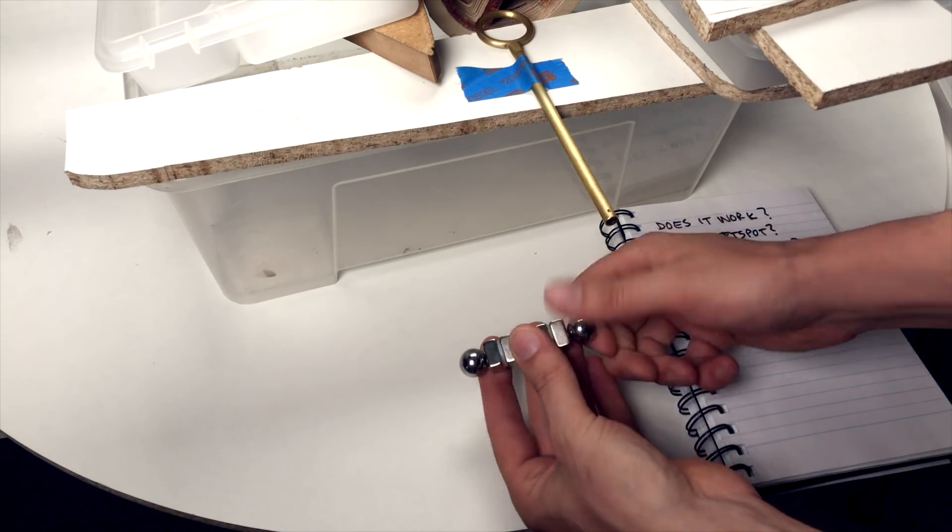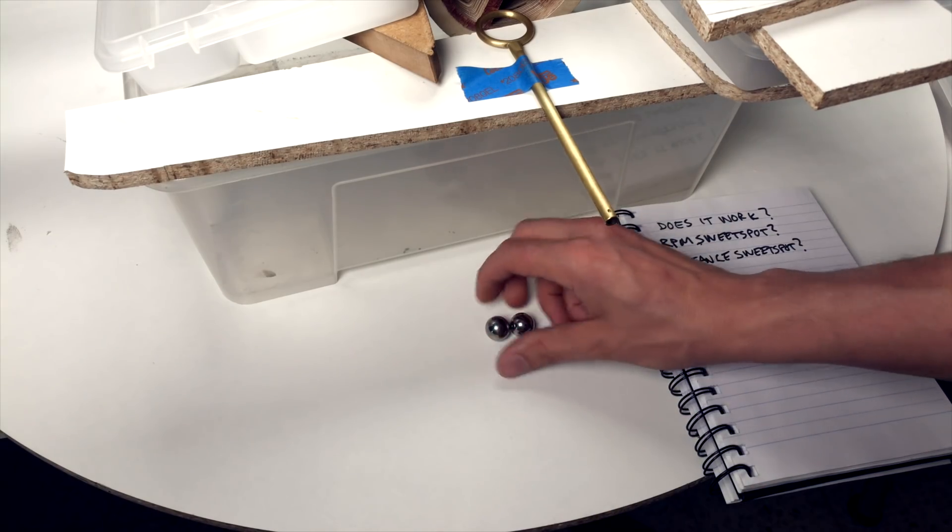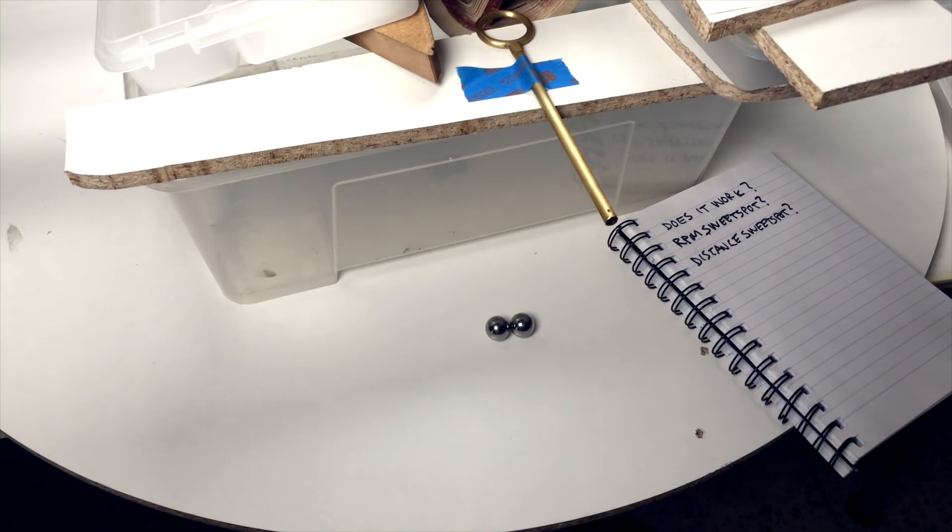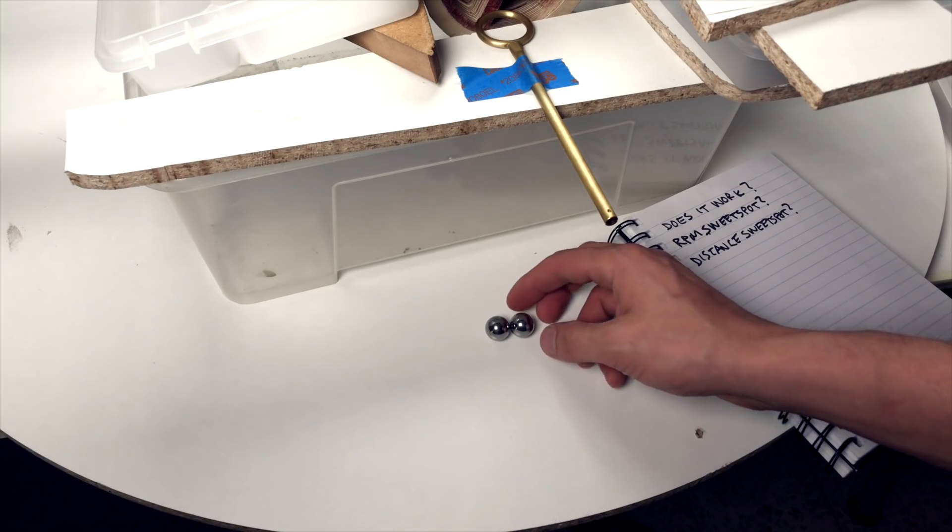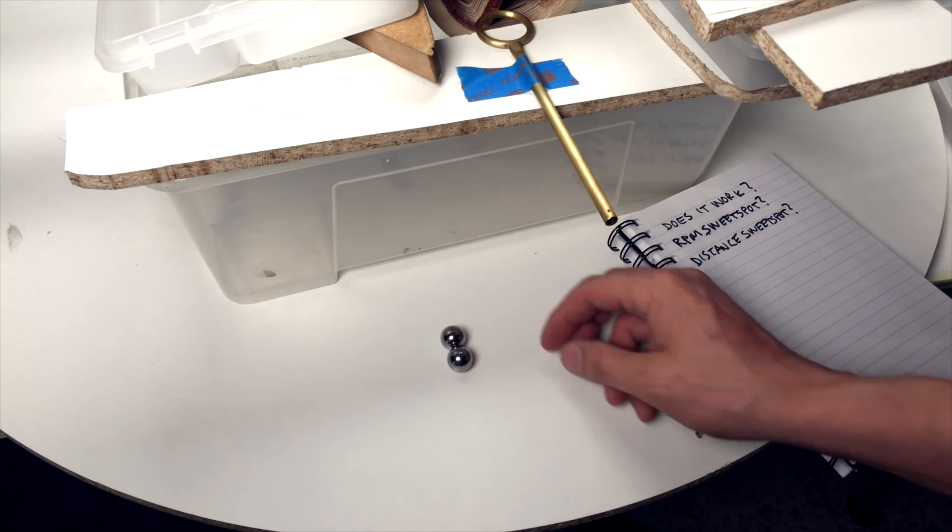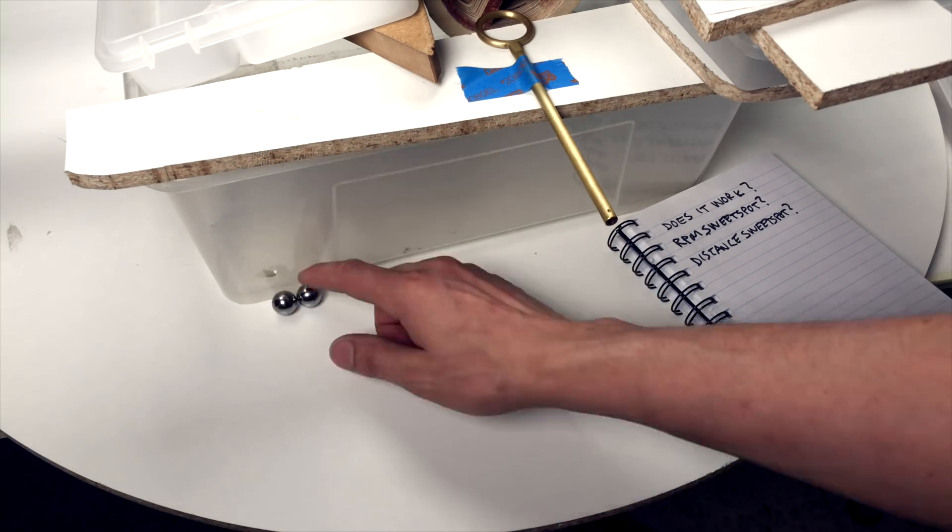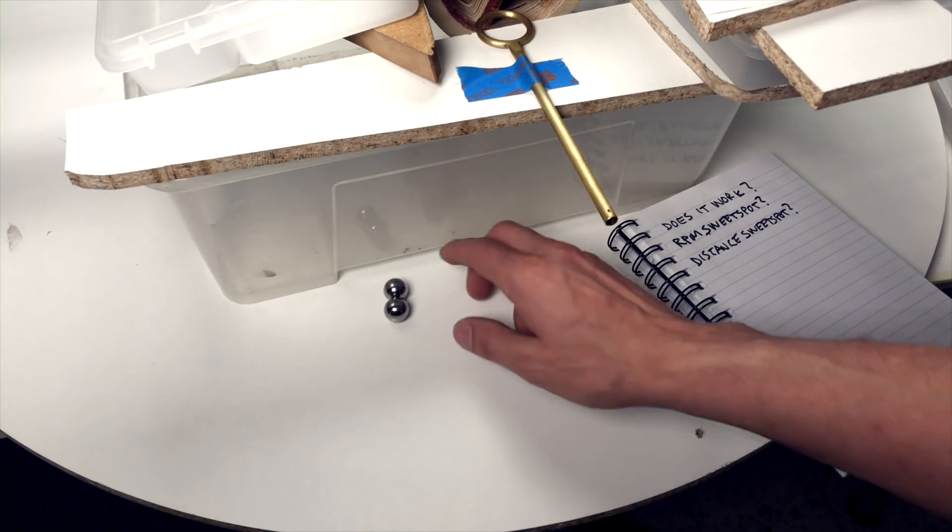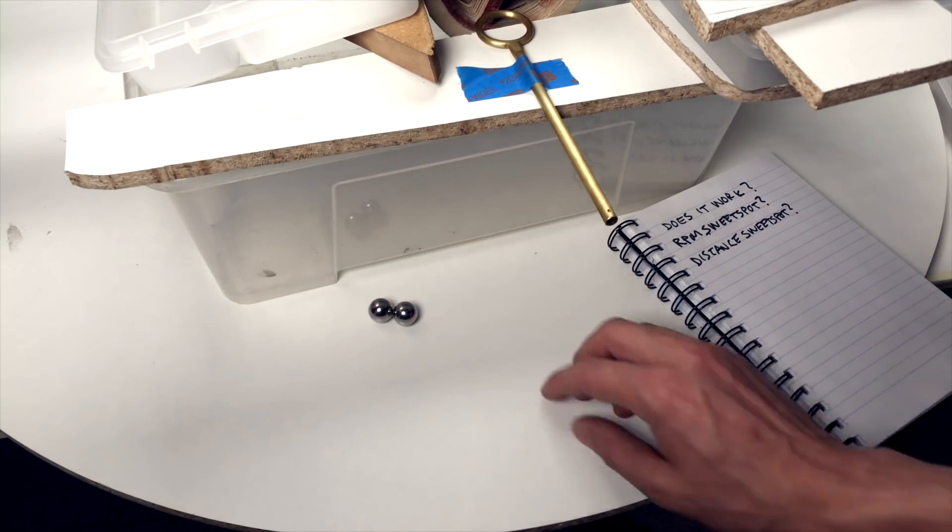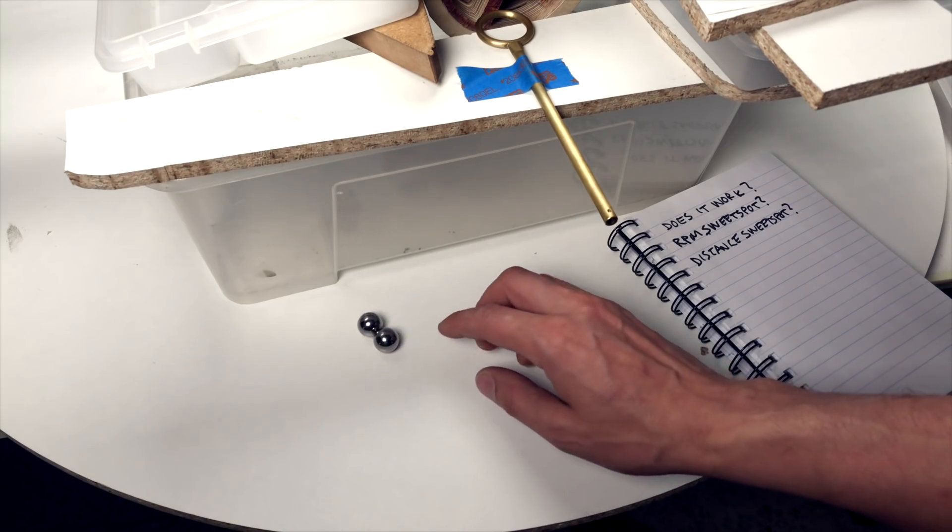So if I magnetize two marbles, you're going to see that they will stick together, they're not rolling. And if I give them a little push, they circle each other.